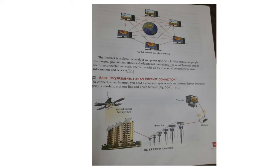What are the basic requirements to connect to the internet? You need a computer system, an internet service provider (ISP), a modem, a phone line, and a web browser. In the picture you can see a telephone line, a computer, and a modem, all labeled.